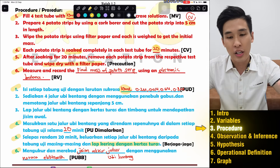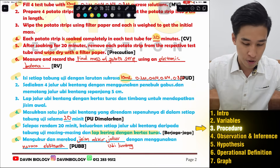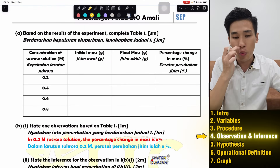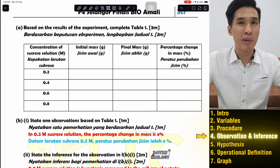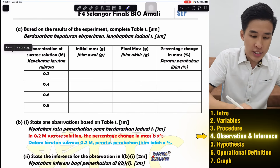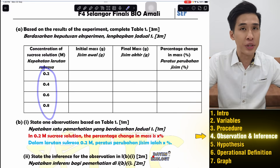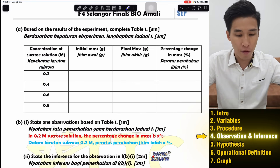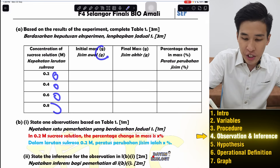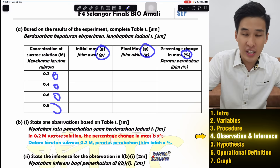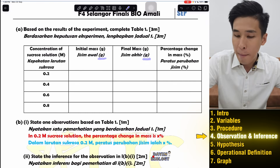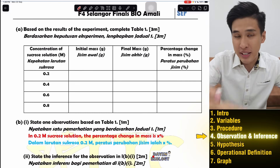The next section is recording results, which is the easiest part to score marks on, but many students make careless mistakes. The concentration values — 0.2, 0.4, 0.6, 0.8 — will already be given; just copy them. You don't need to write the unit in the data cells if the unit is already in the table header. Remember: mass is always in grams, and percentage change is in percent.